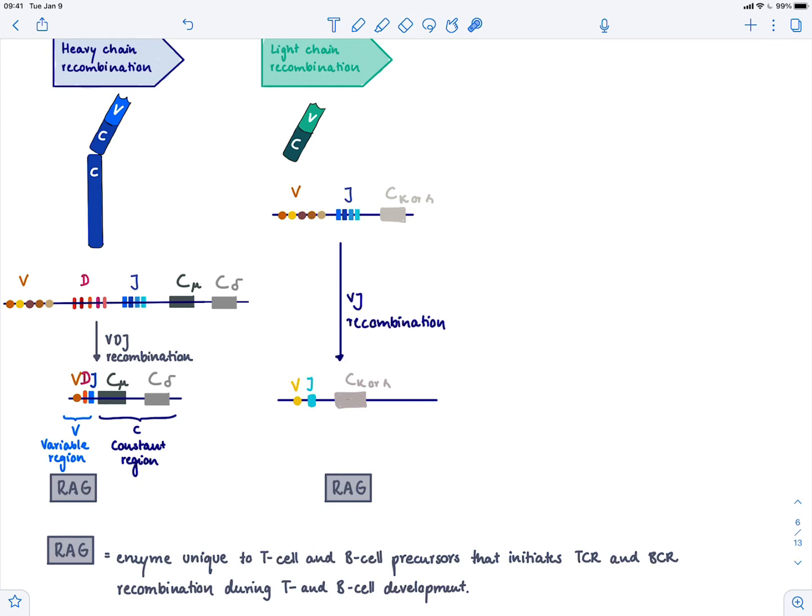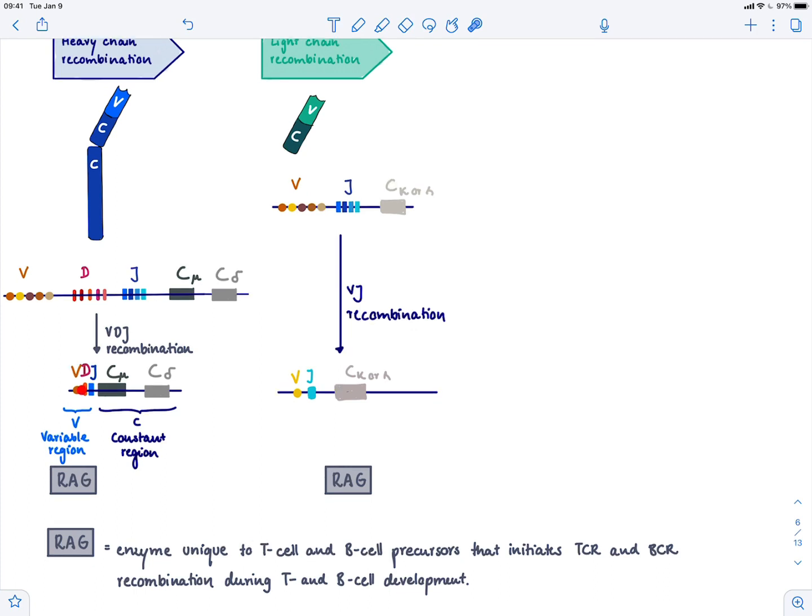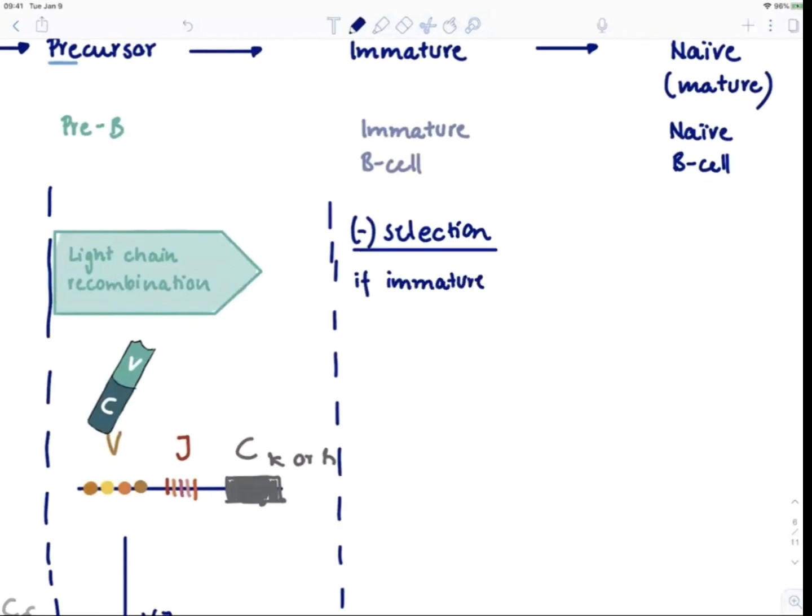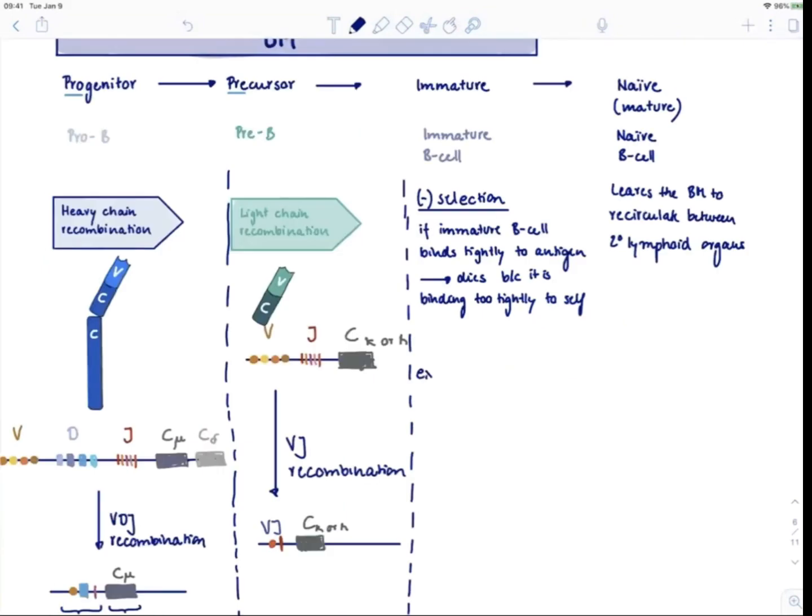After the heavy and light chain recombination has occurred, we're dealing with an immature B cell. This immature B cell has to pass one test, the so-called negative selection. Here it's tested if it binds too tightly to antigen presented in the bone marrow. If it does, it should die off because we want to prevent auto-reactive antibodies, since we're dealing with bone marrow antigen—that should all be self antigen. At one point this immature B cell will express IgM antibodies on its surface.